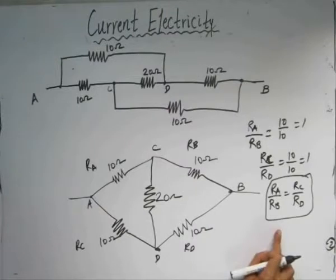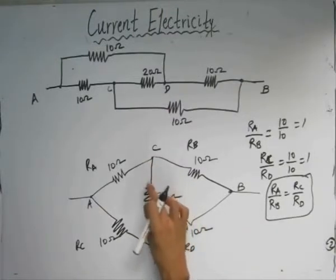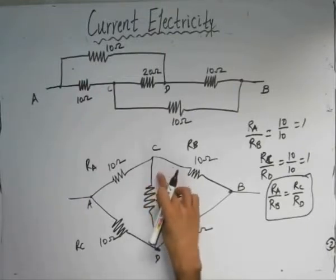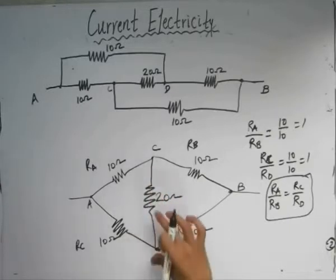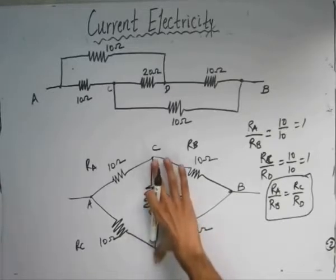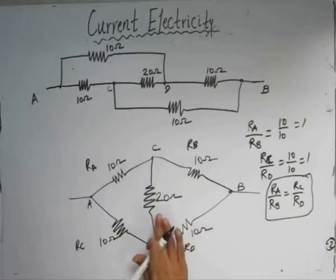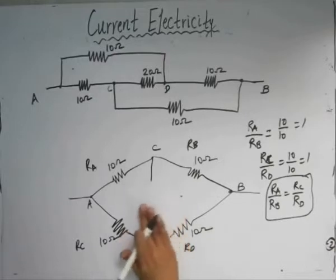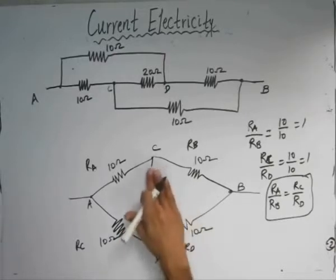Since this condition is satisfied, we can say that no current will flow across the diagonal branch. If no current is passing through this branch, we can say that this branch is a redundant branch — the potential difference between points C and D is zero. Since this element becomes redundant, we can remove it.